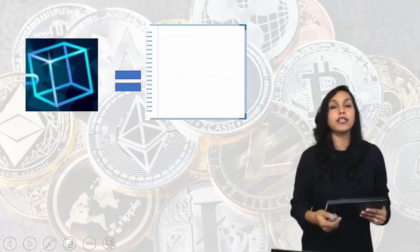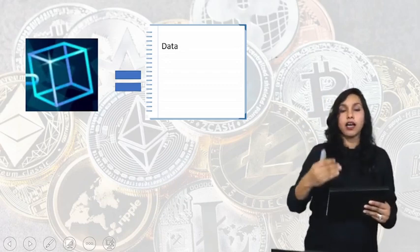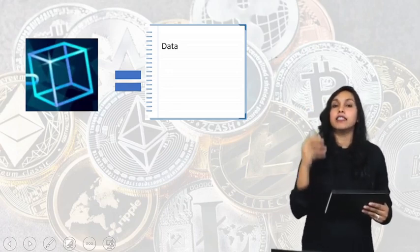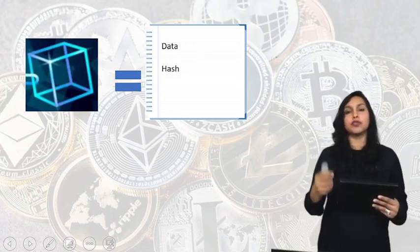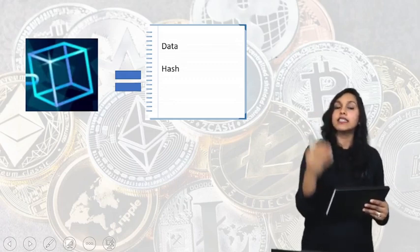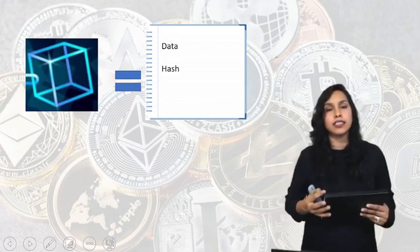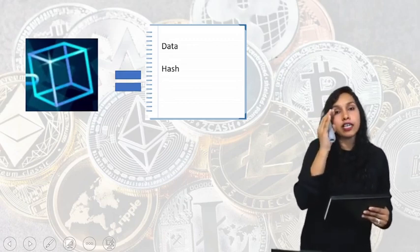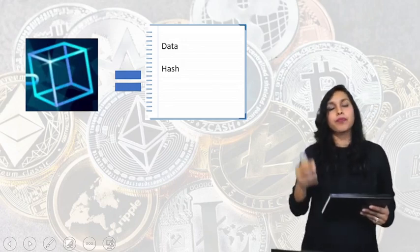Now, what is stored on this block? First is data — relevant information like from whom the money came and to whom the money went; all this data is mentioned in this particular block. Then this block also has a hash. What is this hash? Just like in Aadhaar authentication we have our thumbprint, which is our unique ID, similarly every block has a hash, which is the unique identity code of that block.